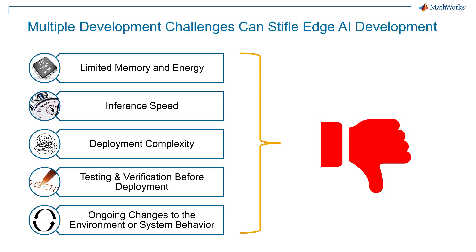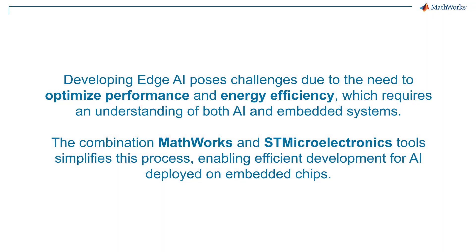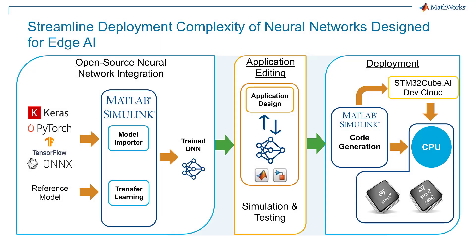However, there are many challenges in deploying neural networks, such as limited onboard resources, deployment complexity, and the verification of deployed optimized networks. In this video, we will show how someone without deep knowledge of AI or embedded systems can deploy a neural network to an STM32 device in an efficient and straightforward manner. The workflow highlighted today shows the deployment of an LSTM network representing a virtual sensor. This network is imported from TensorFlow and deployed to an STM32 Nucleo F767ZI for state of charge estimation in a battery management system.